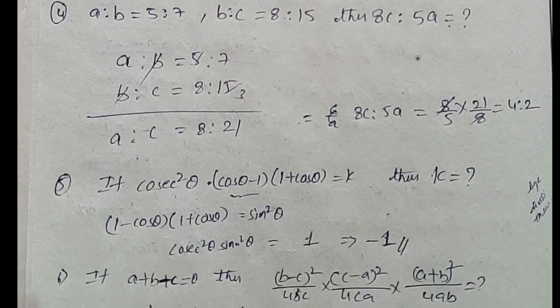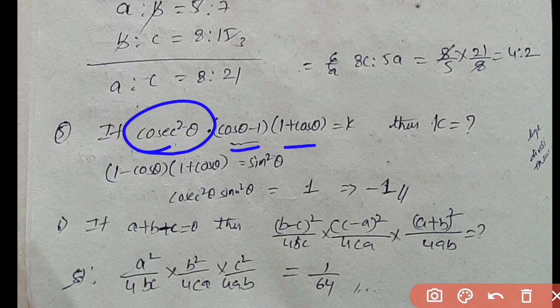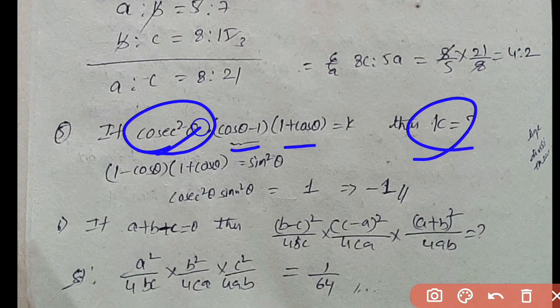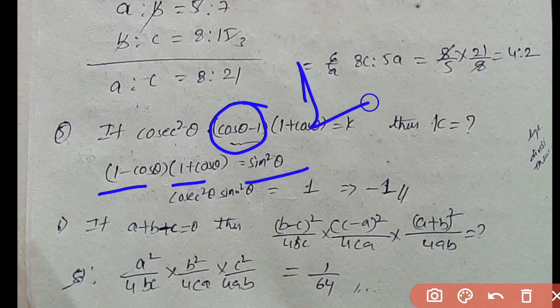Next: Trigonometry question. Given cos θ × (cos θ − 1)/(1 + cos θ) = k, find k. Using the formula cos²θ and sin²θ: (1 − cos θ)(1 + cos θ) = sin²θ. The answer comes to minus 1.